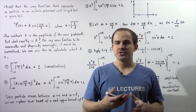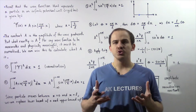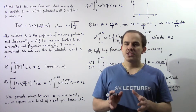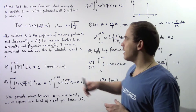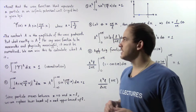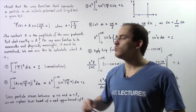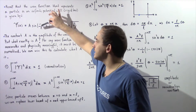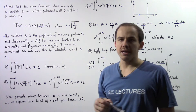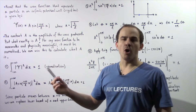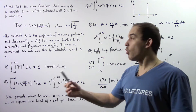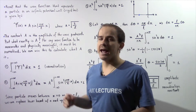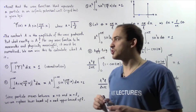In our discussion on particles inside rigid boxes, also known as infinite potential wells, we said that the wave function representing our particle inside a rigid box is given by this equation. The wave function is equal to the constant A multiplied by sine of nπ divided by L, multiplied by x, where x is the position of the particle along the x-axis, n is the quantum number, π is the constant, and L is the width of that rigid box.